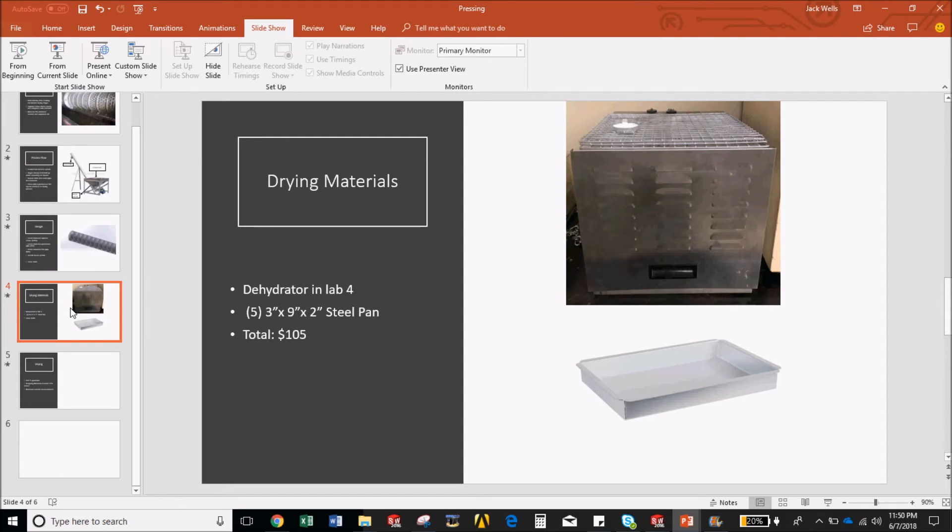Wax paper will be placed into the steel pans shown on the right and the buckets of press cake will be spread evenly into the steel pans to be put into the dehydrator in lab 4. The cost of the drying process is $105 for the five steel pans.